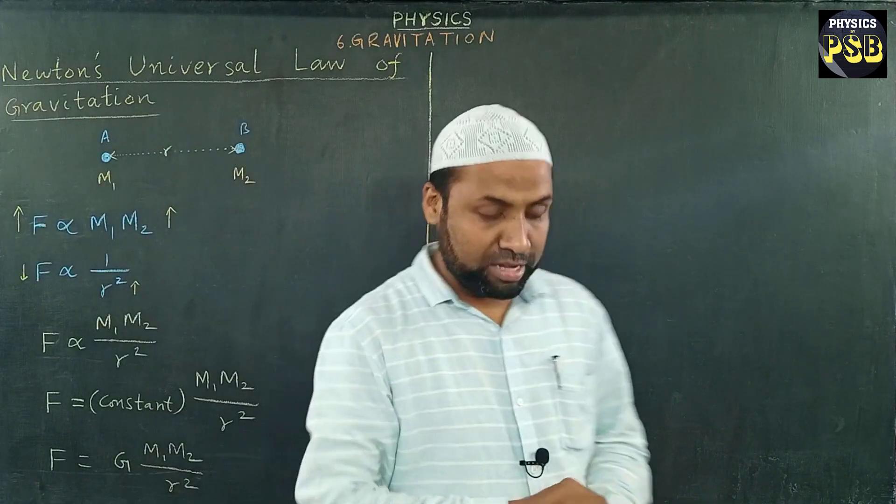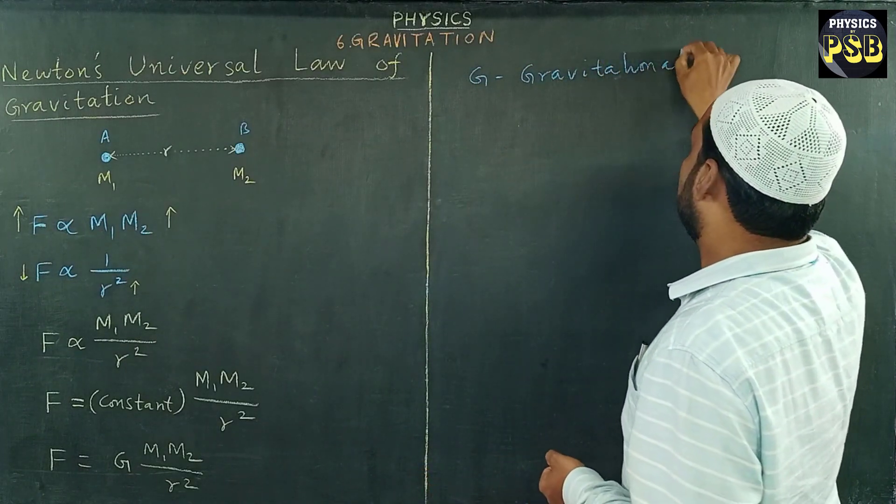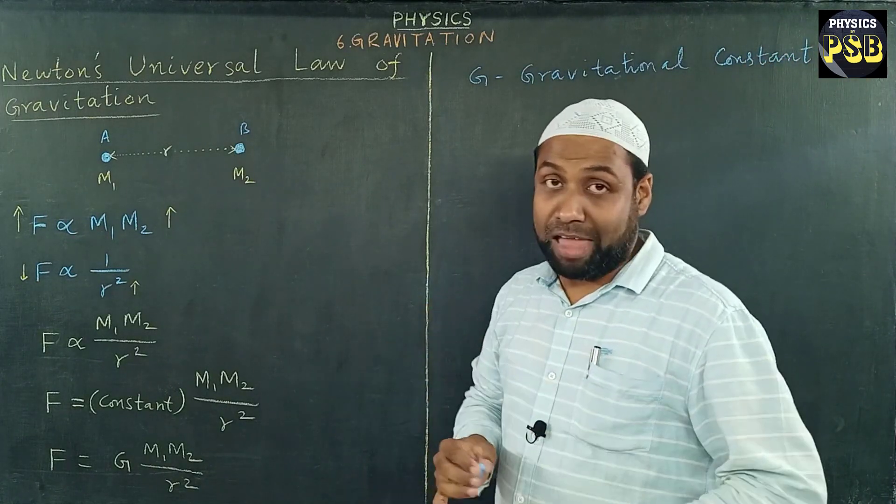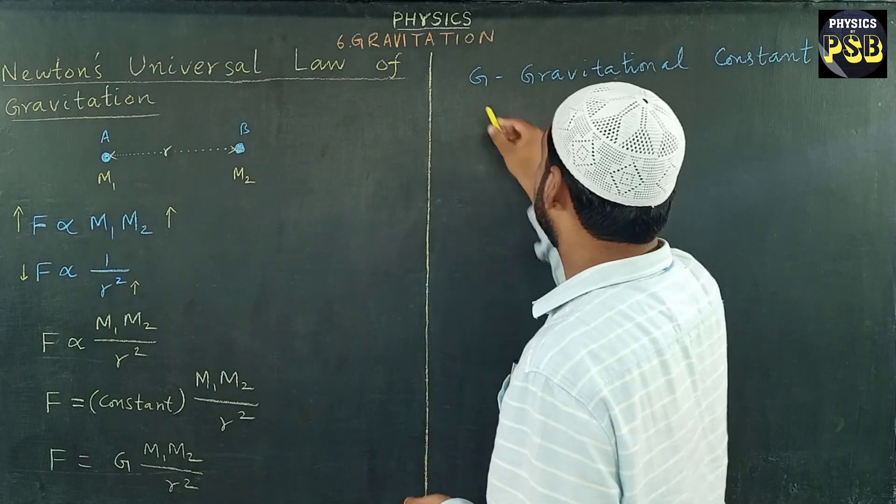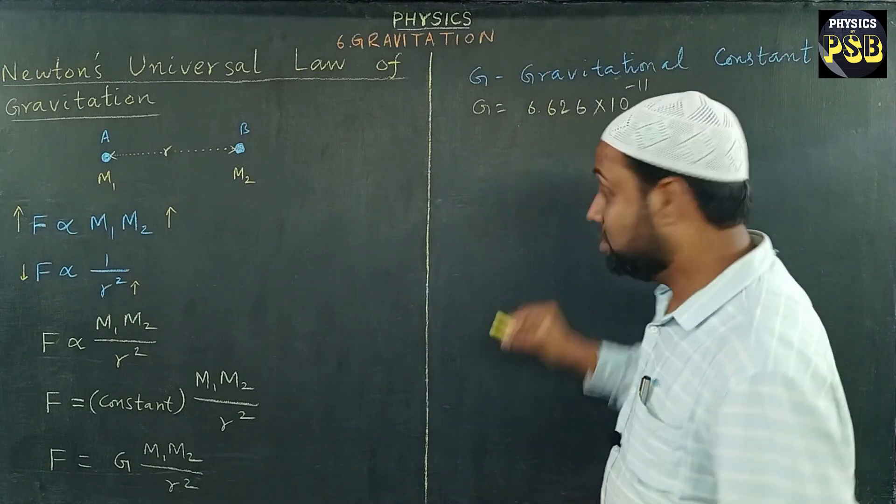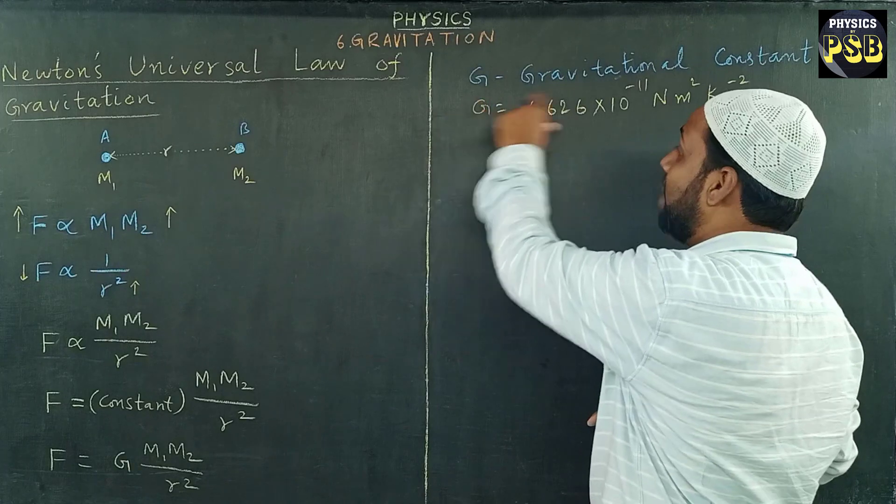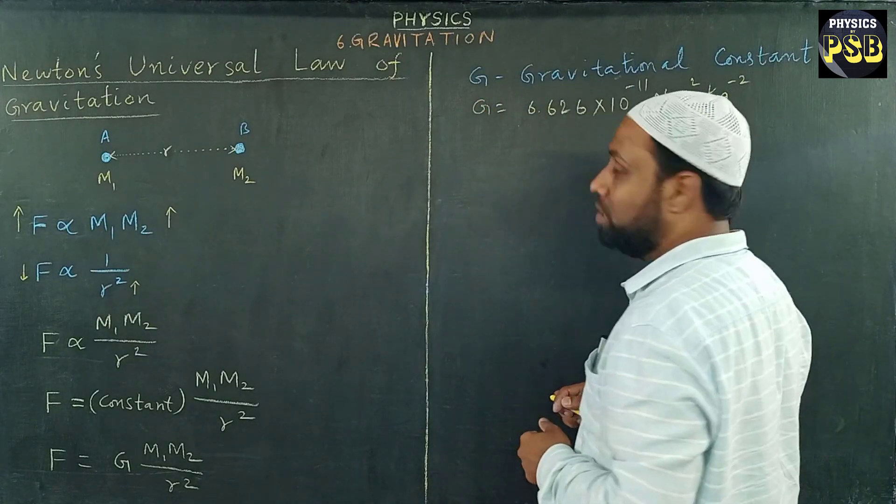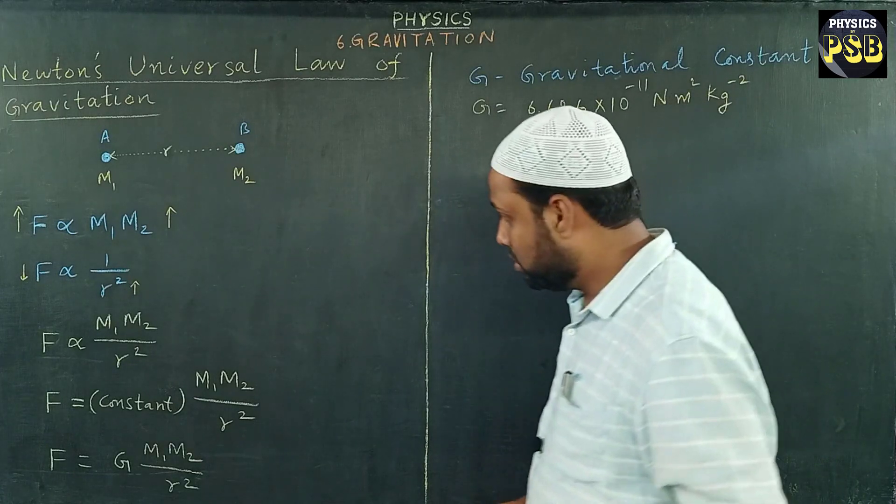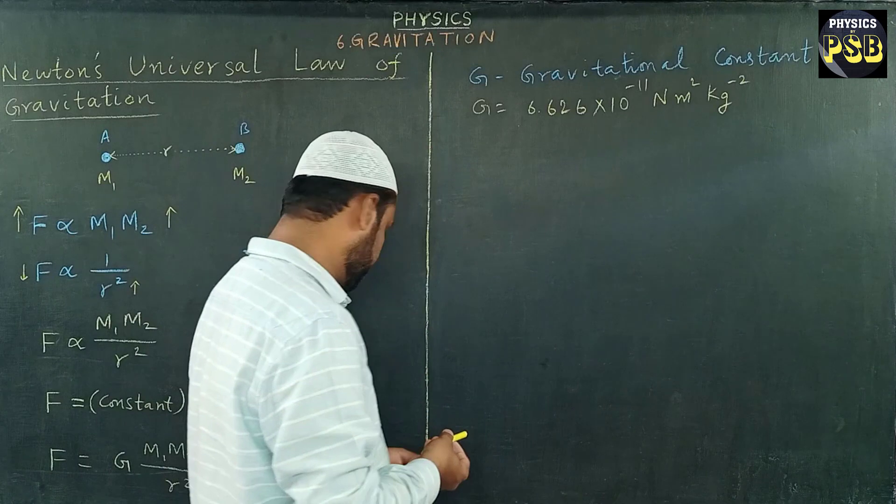The value of gravitational constant G is nothing but 6.626 into 10 power minus 11 and its unit is Newton meter square per kilogram square. This is the value of gravitational constant. Let us explain how do we get this unit. I am going to relate this equation here.